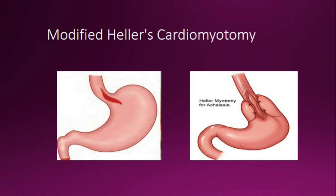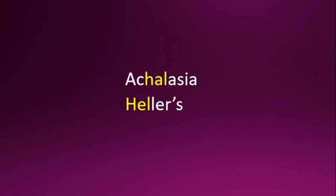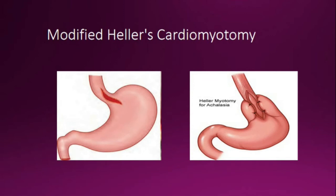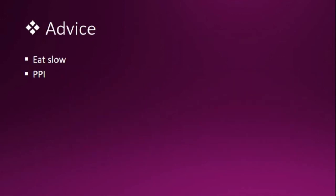The surgical treatment is modified Heller's cardiomyotomy — you can remember this because 'achalasia' contains 'hell' and relates to Heller's. It is a laparoscopic, minimally invasive method that helps 90% of patients. It involves cutting the circular muscle fibers of the lower esophagus and cardia so that constriction cannot occur.